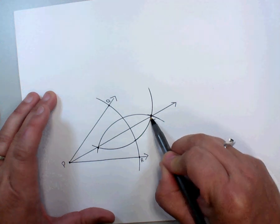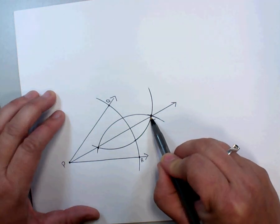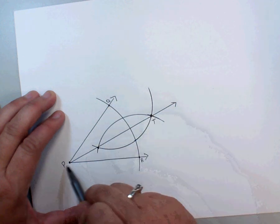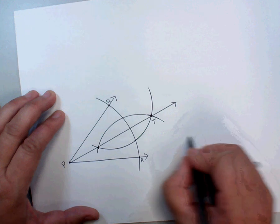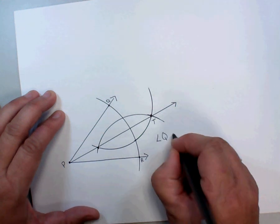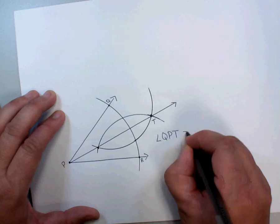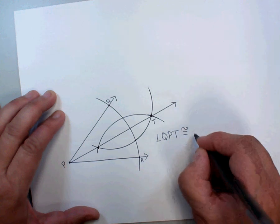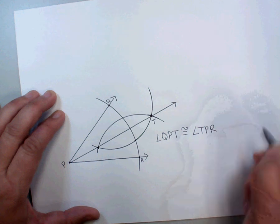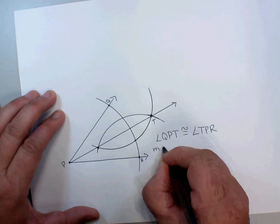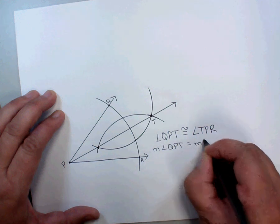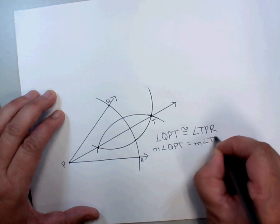So we have drawn angle QPT and angle TPR, and they are bisectors. So angle QPT we know is going to be congruent to angle TPR. We also know that the measure of angle QPT will be equal to the measure of angle TPR.